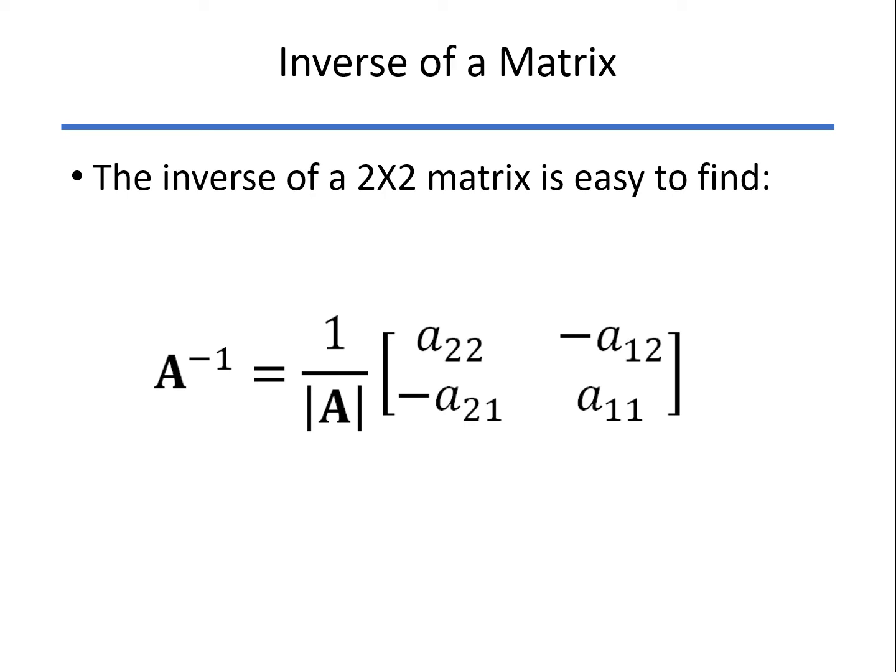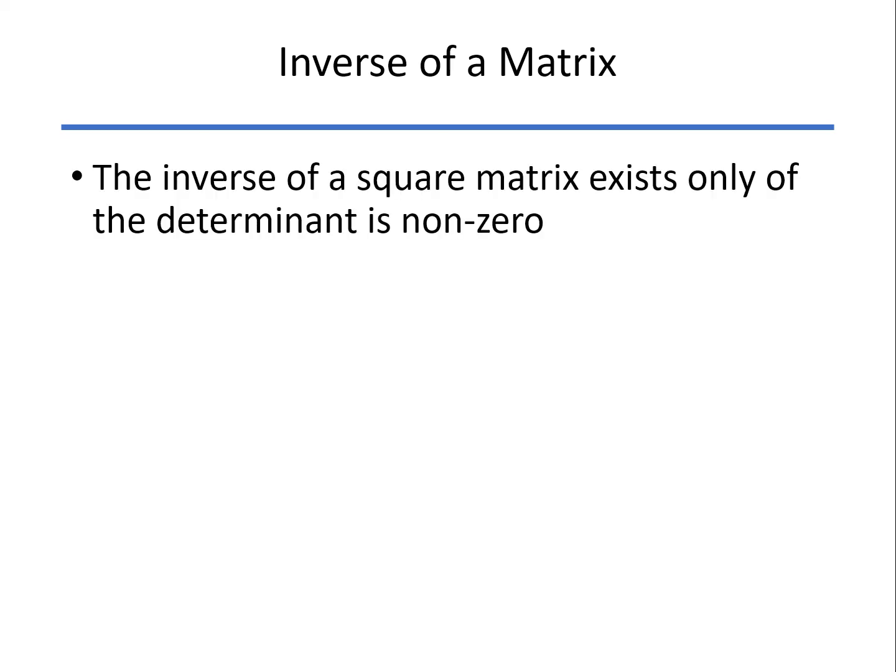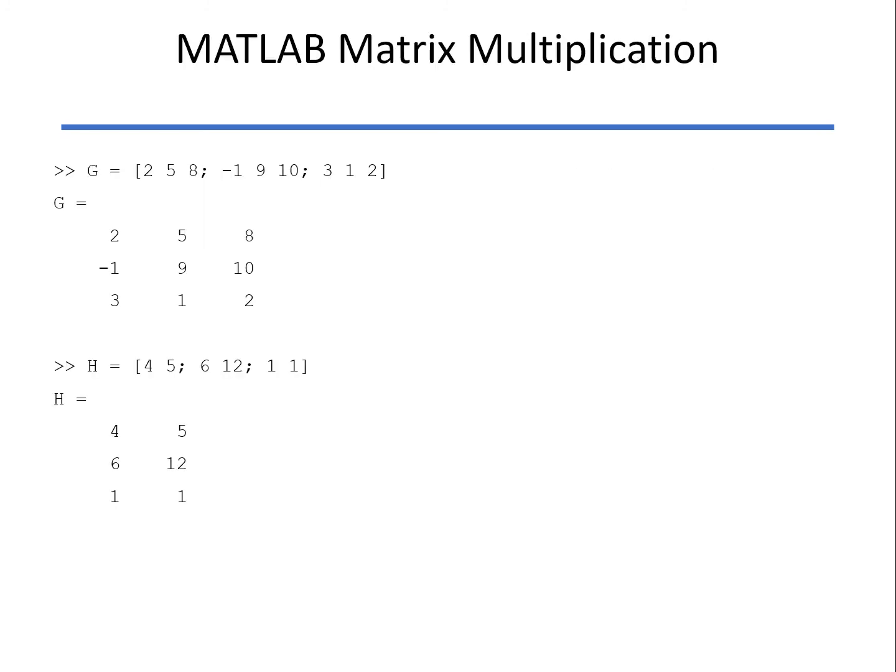For a 2 by 2, it's pretty easy to find by hand. It's 1 over the determinant. Then, for your matrix, you take the original matrix, swap the A11 and A22, change the signs of A12 and A21. It's important to remember that the inverse only exists if the determinant is non-zero.